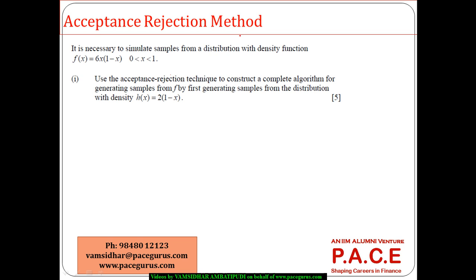Let us look at the method of generating samples using the acceptance-rejection method of Monte Carlo simulation. It is necessary to simulate samples from a distribution with a density function f(x). We will use the acceptance-rejection technique to construct a complete algorithm for generating samples from f, by first generating samples from the distribution with density h(x) = 2(1 - x).